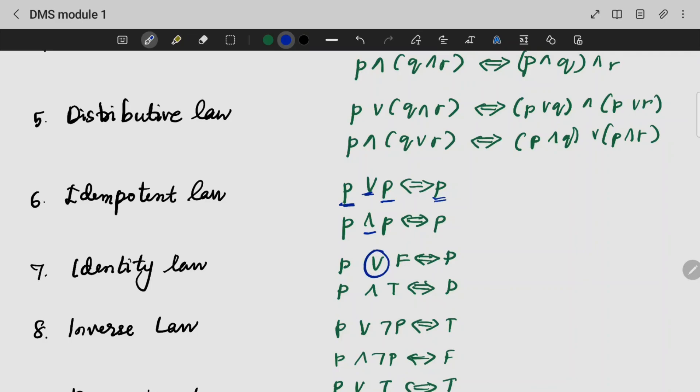Identity law. P OR false - that value is dependent on our output. So, P OR F is nothing but P. That's why, if you have a false statement, it will be all zeros. If P is 1, it will be 1. If P is 0, it will be 0. That's why, it is dependent on P.